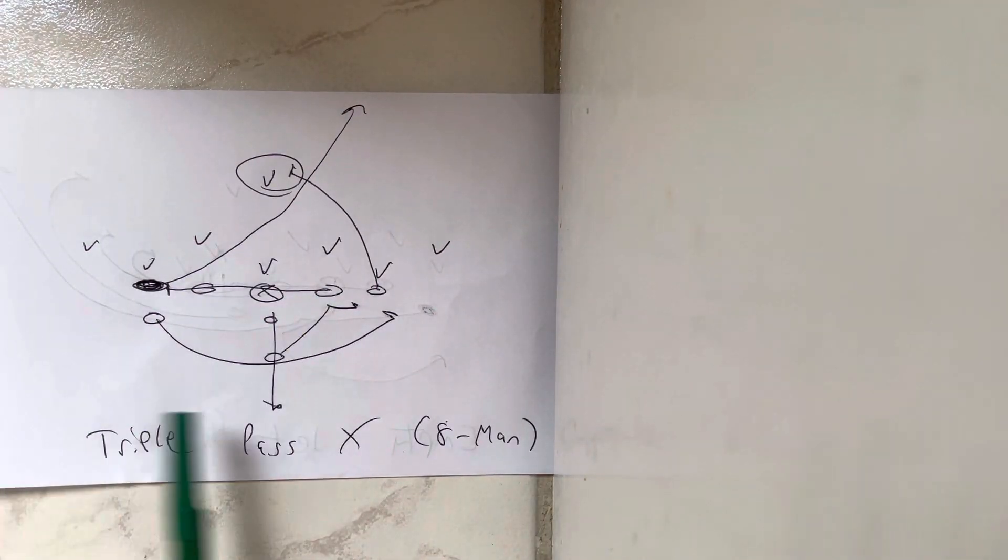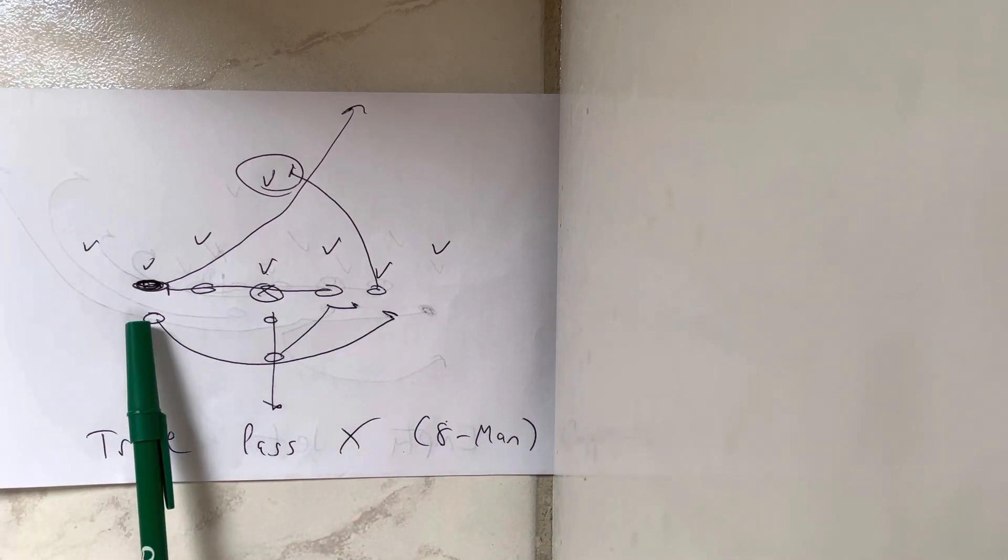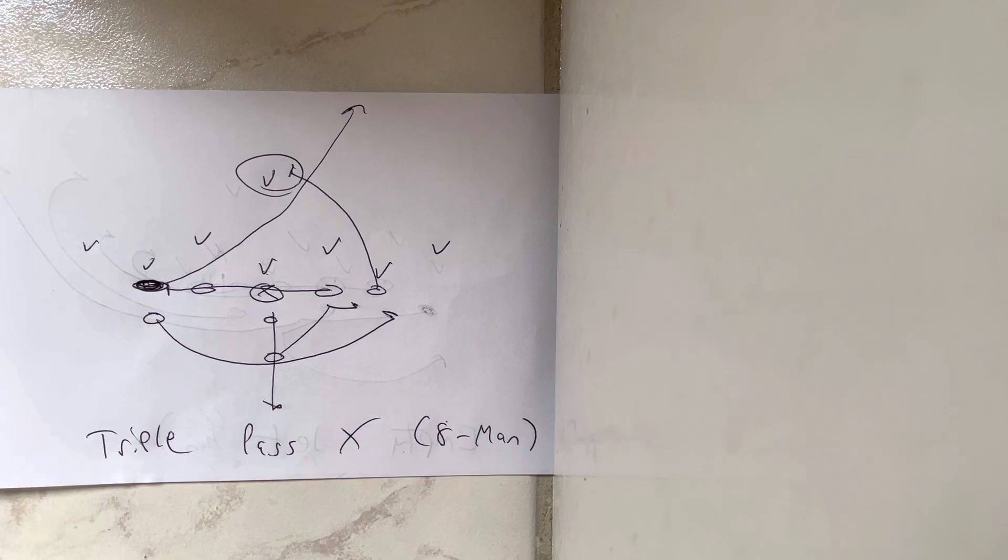The line is going to slide away from the call. The B-back is going to block the first threat from the guard out. The A-back is going to run the pitch. He's going to block the first threat off the B-back. So you're going to have five-end protection.